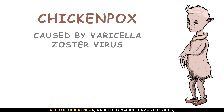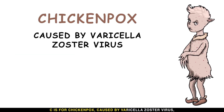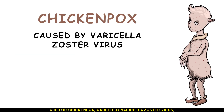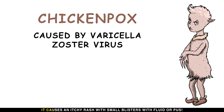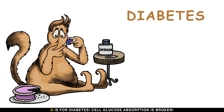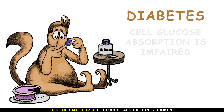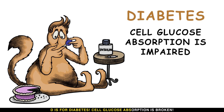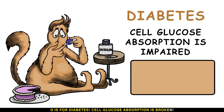C is for chicken pox, caused by the varicella-zoster virus. It causes an itchy rash with small blisters filled with fluid or pus. D is for diabetes — cell glucose absorption is broken.